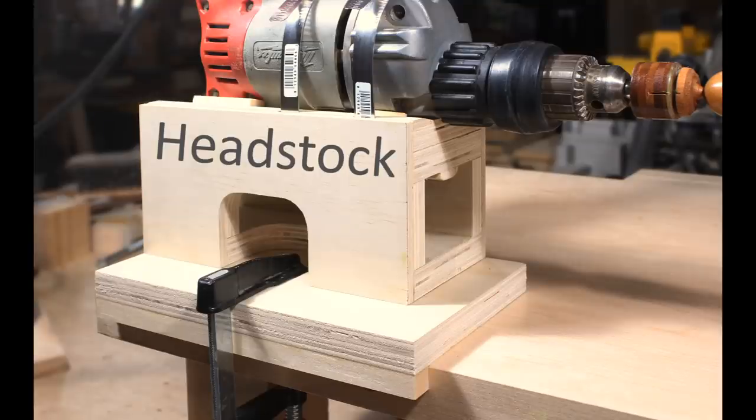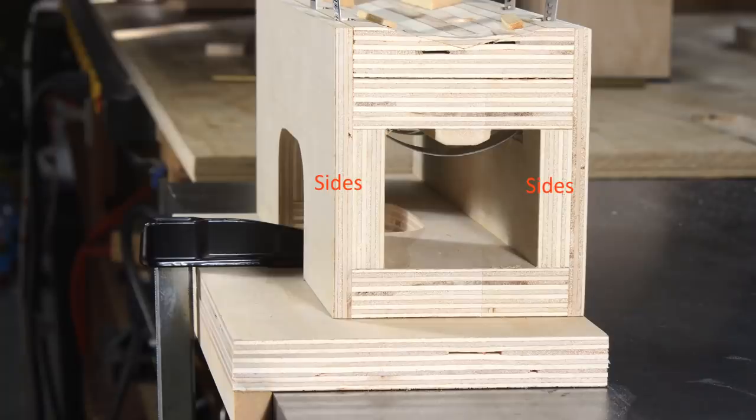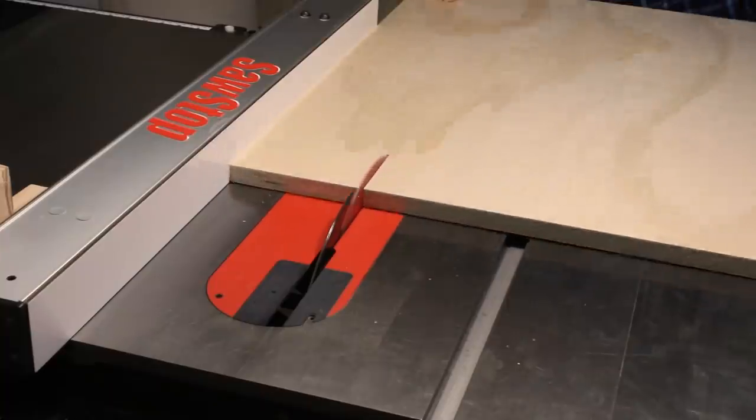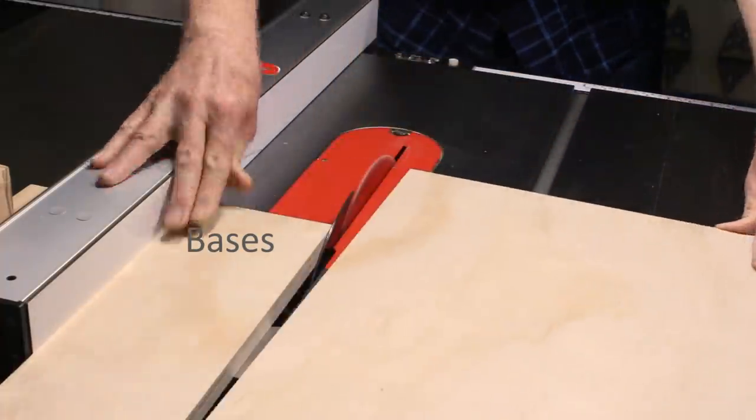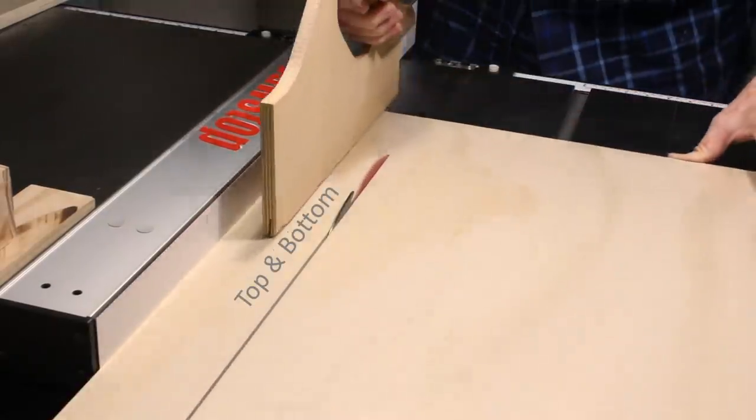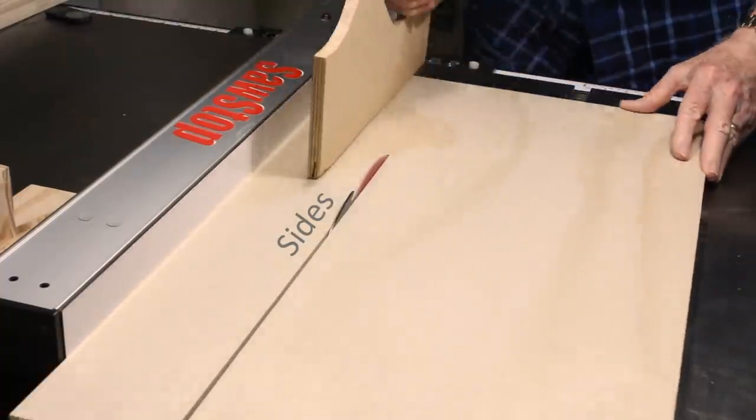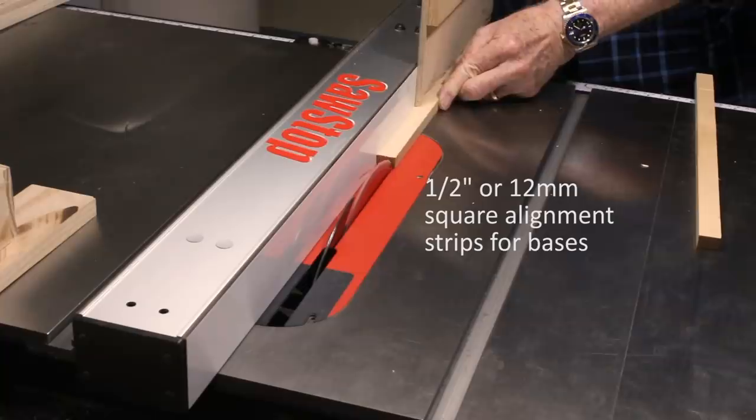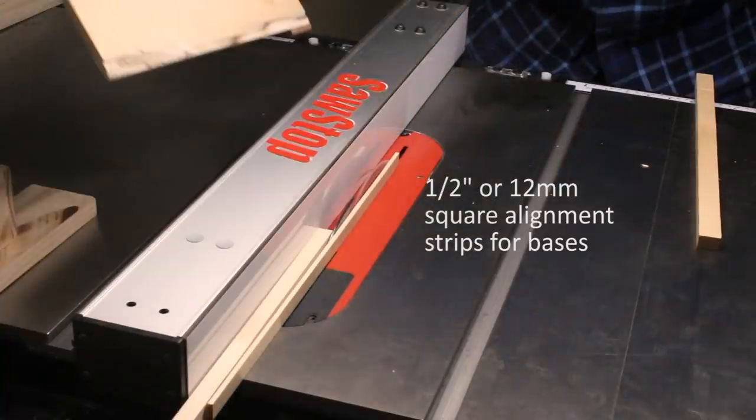The headstock is essentially a small box adapted to clamp an electric drill. Here are its parts: two sides, a top, a bottom, and a drill bed. The base has a strip glued to the front edge to align it with the workbench. I use 3 quarter inch or 18 millimeter plywood to form the parts of the box and all the bases. I'll include the important dimensions in a drawing on my website. The headstock is 7 and a half inches long, or 19 centimeters.